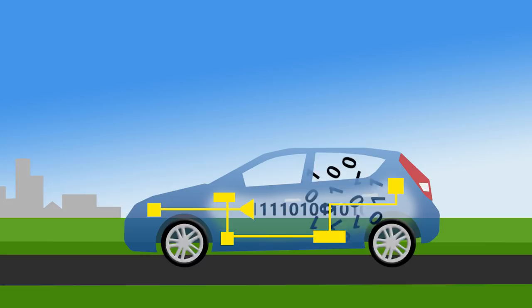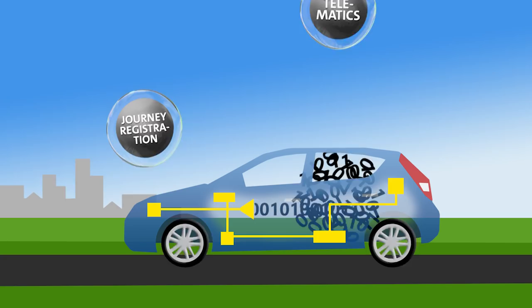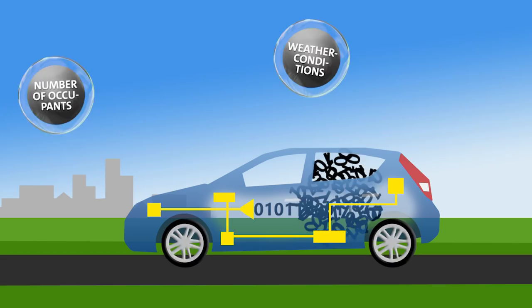Modern technology allows us to retrieve this valuable data straight away from the vehicle and apply it to such uses as driving style, fuel consumption, telematics, route registration, traffic flows, condition on the road, weather conditions or, for example, the number of passengers.